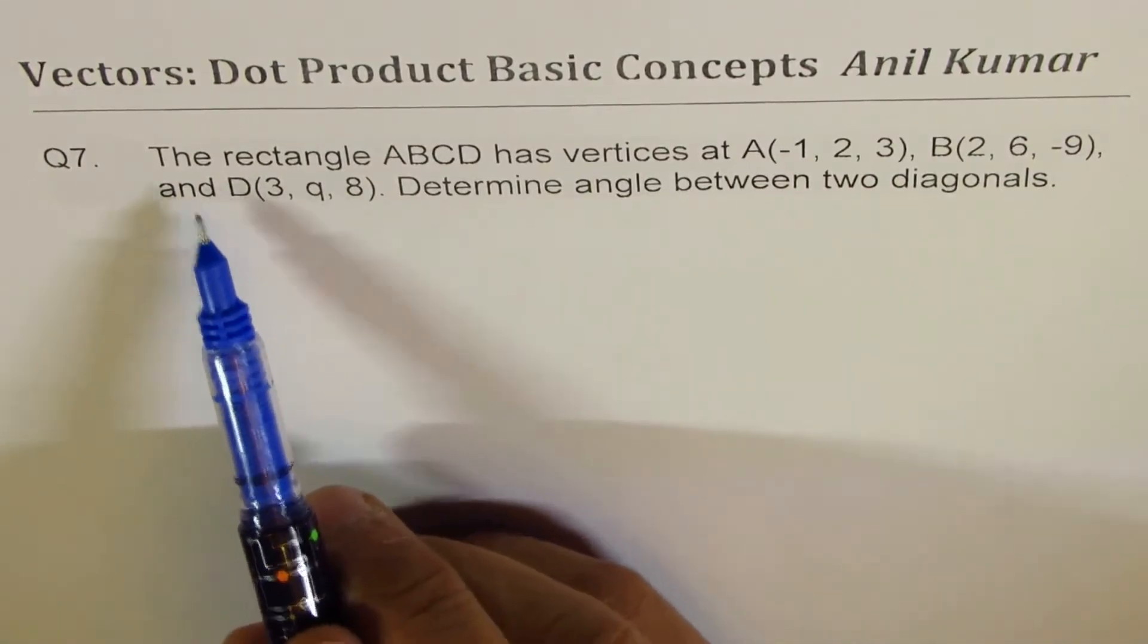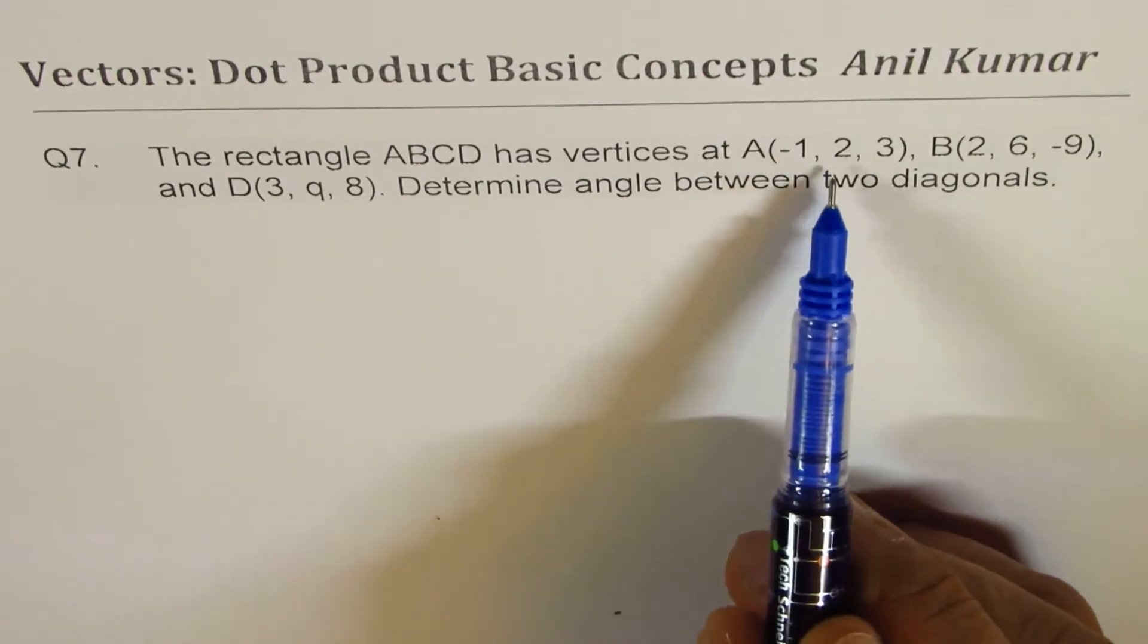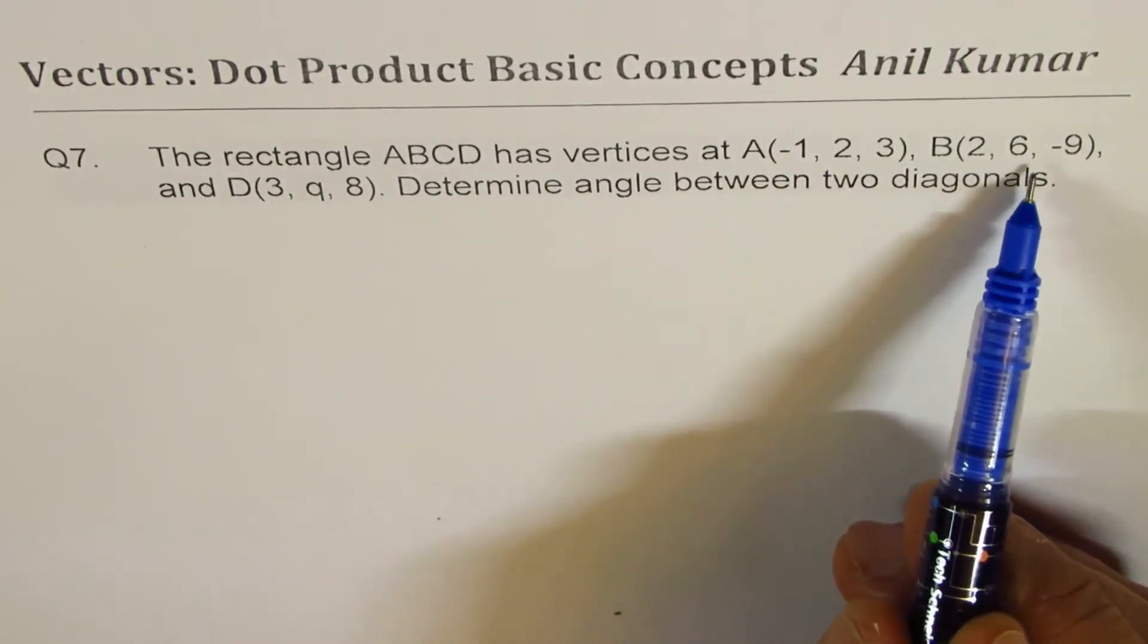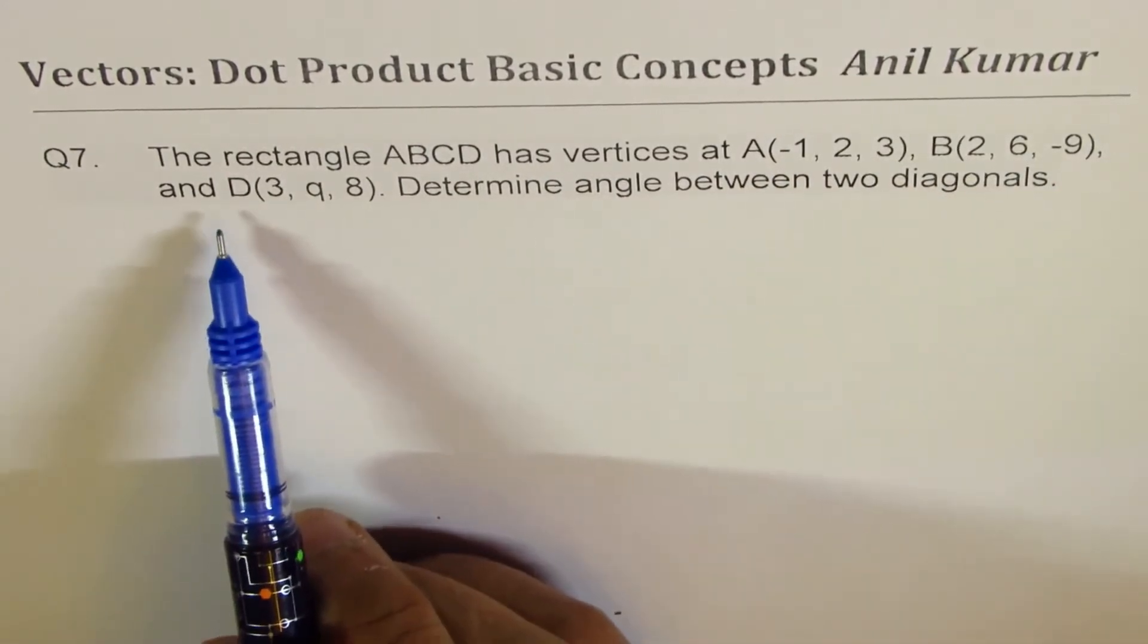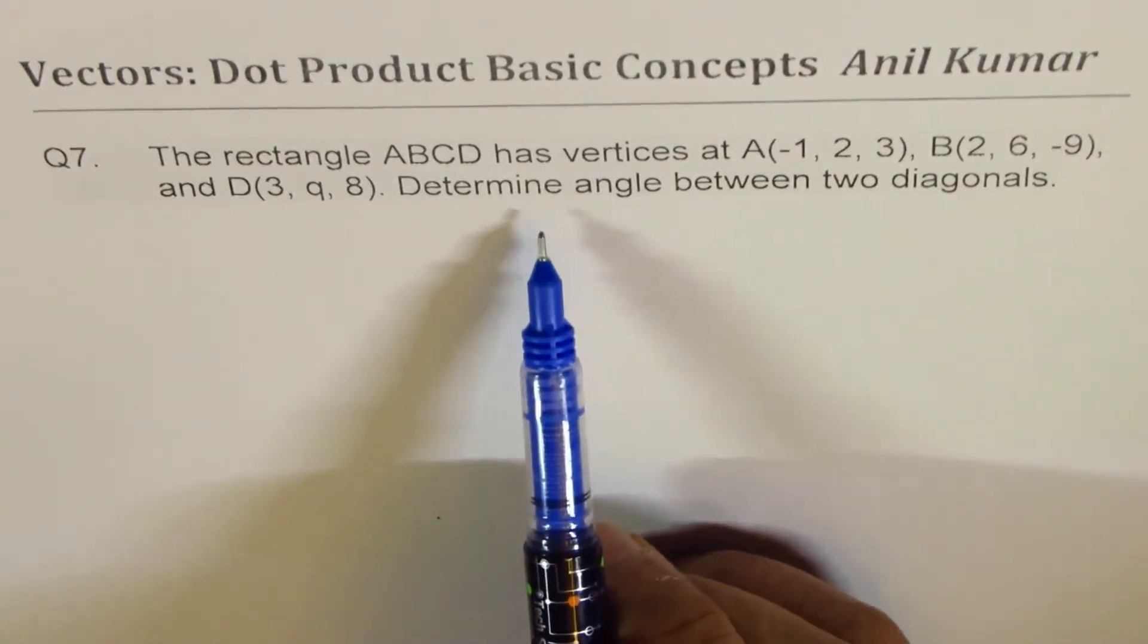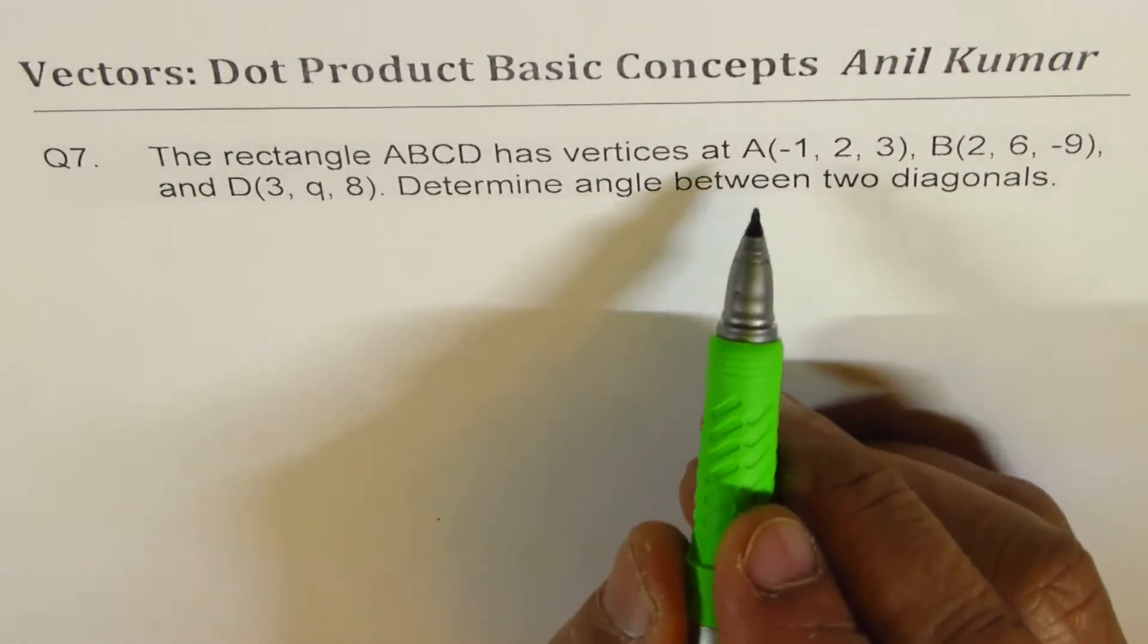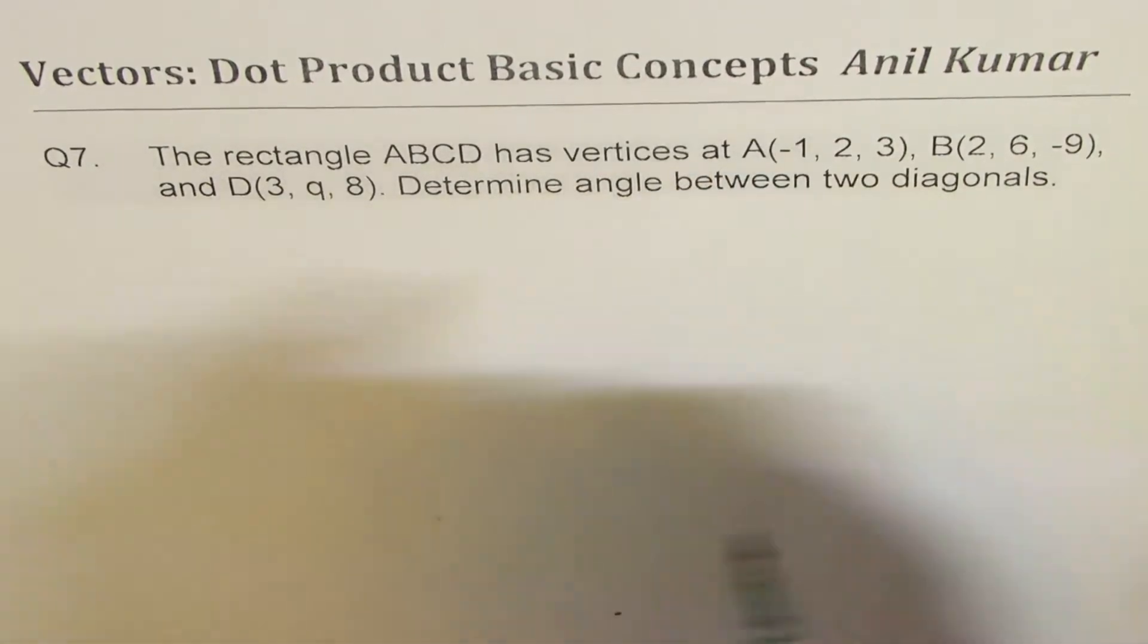Number 7: The rectangle ABCD has vertices at A(-1, 2, 3), B(2, 6, -9), and D(3, Q, 8). Determine angle between two diagonals. Now this is a very interesting question. We are given the vertices, not the vectors.